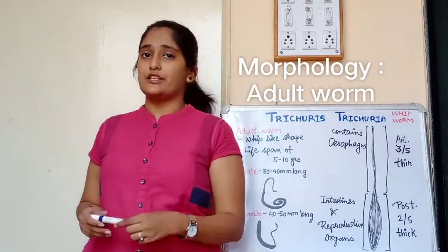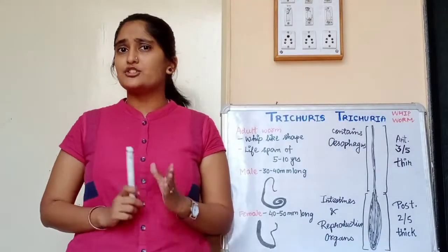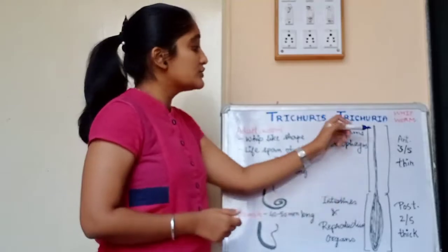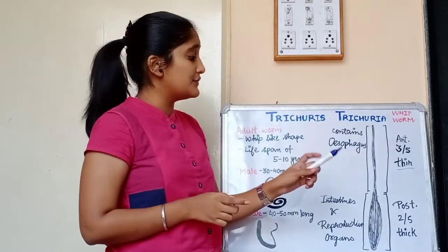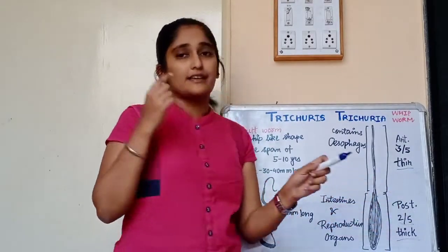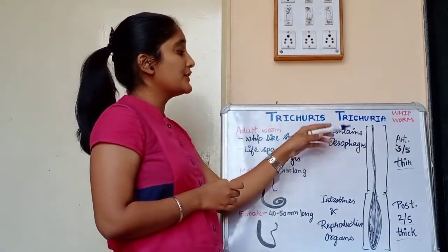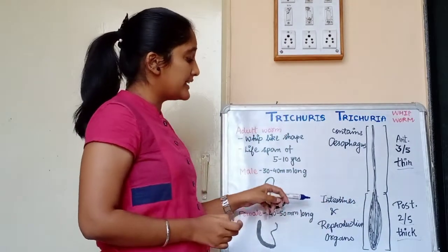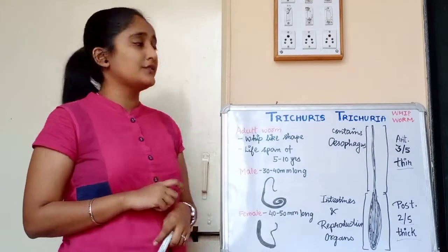Morphology of Trichuris trichiura: the adult worm has a whip-like shape. Its anterior three-fifths are thin and the posterior two-fifths are thick. The anterior three-fifths is the esophagus, and the posterior part contains the intestines and reproductive organs.